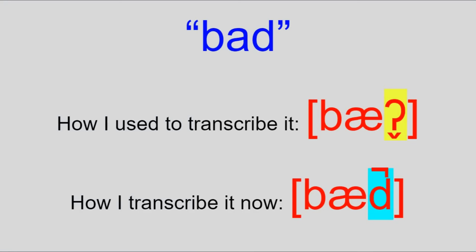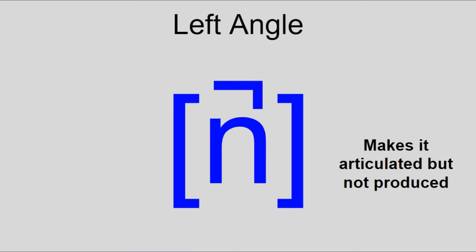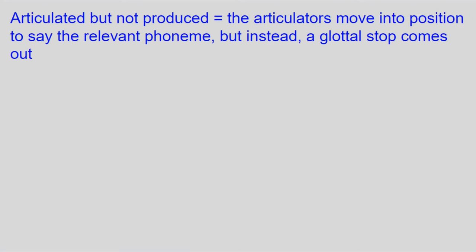Our next diacritic is the left angle, which is specifically used when a consonant is articulated but not produced. That means the tongue moves to a position like you're about to say the consonant, but a glottal stop comes out instead. It's a rather apparent feature of English, and I strongly prefer the left angle over the glottal stop character because it allows me to actually show the phoneme, which can optionally be said, especially in more careful speech.